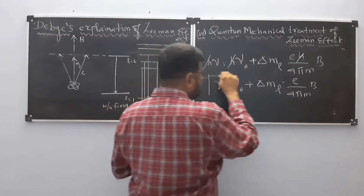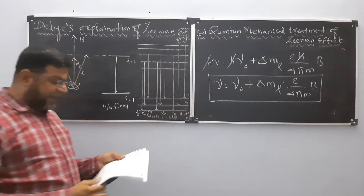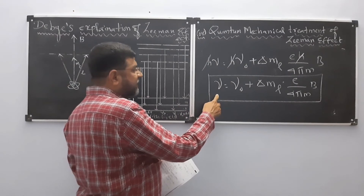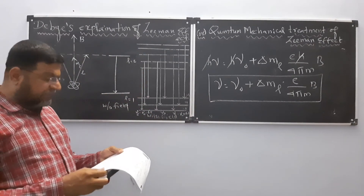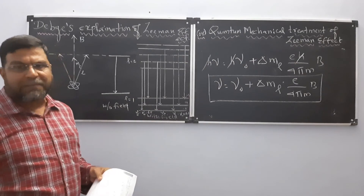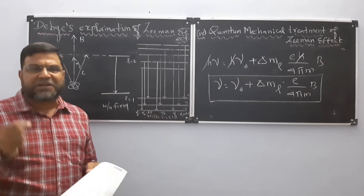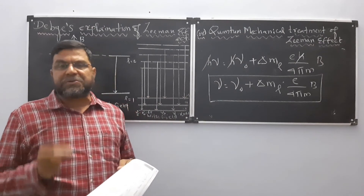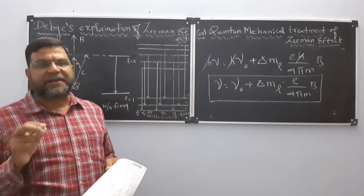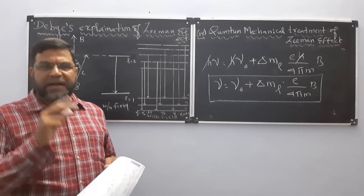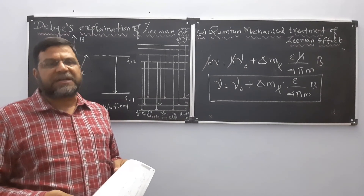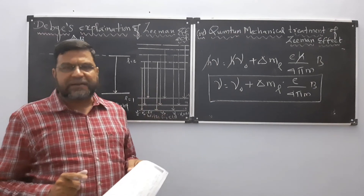This is the explanation given by Debye, where ν is the frequency of radiation emitted in the presence of the magnetic field, ν₀ is the frequency in the absence of the field, and ΔML is the change in magnetic orbital quantum number. This expression shows that splitting occurs due to the application of a magnetic field on a spectral line. To answer this question in an exam, write the basic concepts, draw the two diagrams, derive the Larmor precession expression, and from the energy level diagram write the difference in energy levels, arriving at this final equation. Thank you.